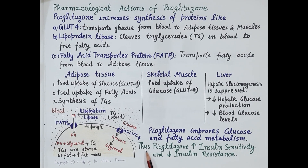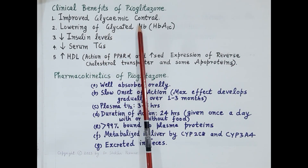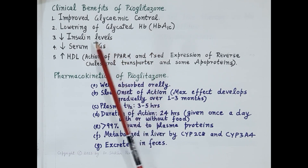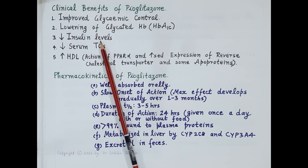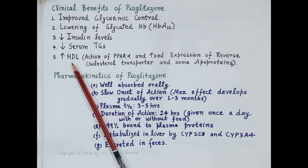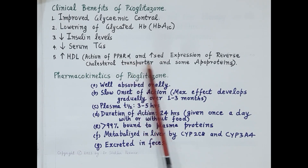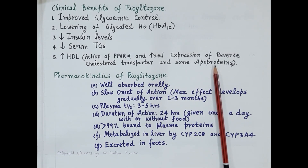Let's summarize the clinical benefits of pioglitazone. Pioglitazone improves glycemic control, thereby lowering glycated hemoglobin (HbA1c) in the blood. As insulin sensitivity increases, levels of insulin in the blood reduce. Pioglitazone breaks down triglycerides in the blood, thereby reducing serum triglycerides. Pioglitazone also increases the concentration of HDL (high-density lipoprotein, the good lipid) in the blood. This increase in HDL is due to pioglitazone's action on PPAR-alpha receptors, and also due to increased expression of reverse cholesterol transporters and certain apoproteins.